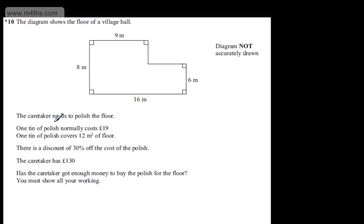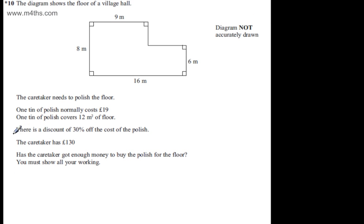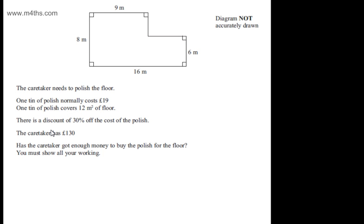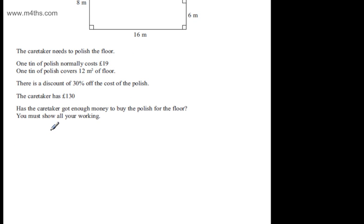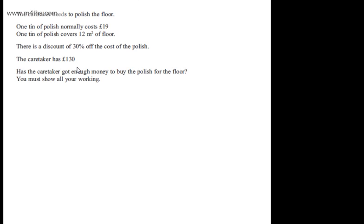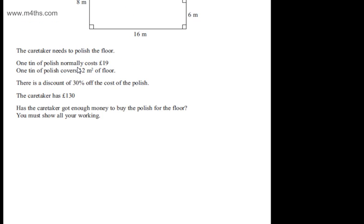One tin of polish normally costs £19. One tin of polish covers 12 metres squared of floor. There's a discount of 30% off the cost of polish. The caretaker has £130. Has the caretaker got enough money to buy the polish for the floor? You must show your working. This is an asterisk question and it's worth 5 marks.